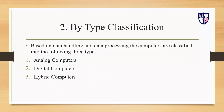Let's move on to the second classification: by type classification. The first classification was by purpose, and this is the second — by type — based on data handling and data processing. Computers are classified into three types: number one, analog computers; number two, digital computers; and number three, hybrid computers.